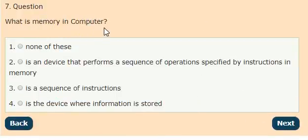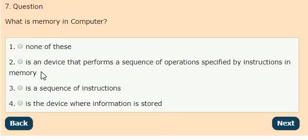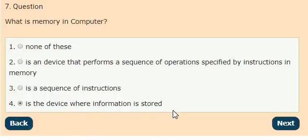Question 7: What is memory in a computer? Options: none of these, it is a device that performs a sequence of operations specified by instructions in memory, it is a sequence of instructions, it is a device where information is stored. The answer is option 4: it is a device where information is stored.